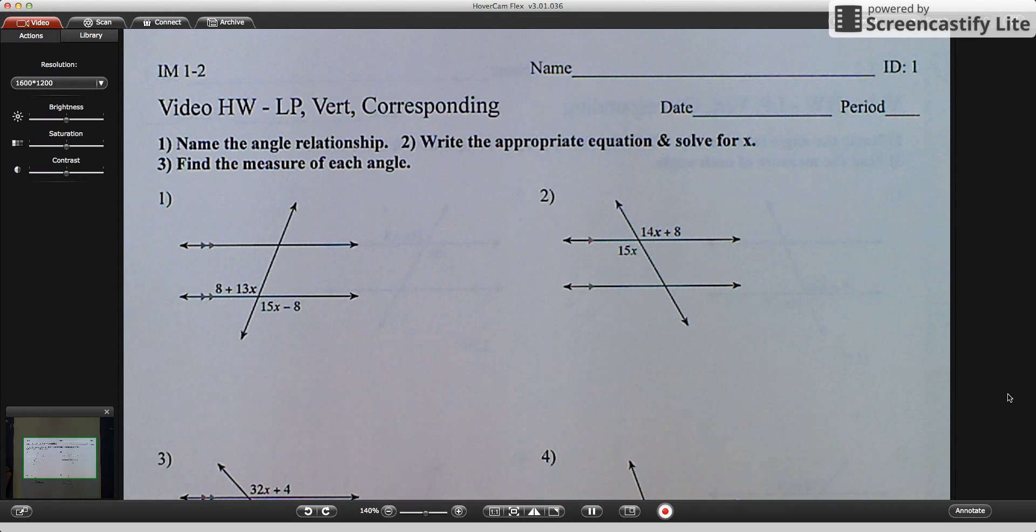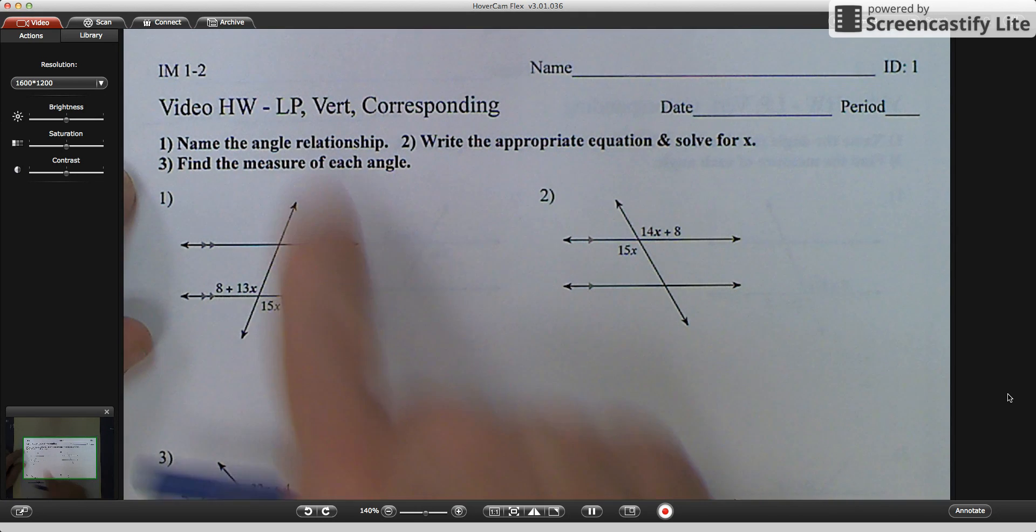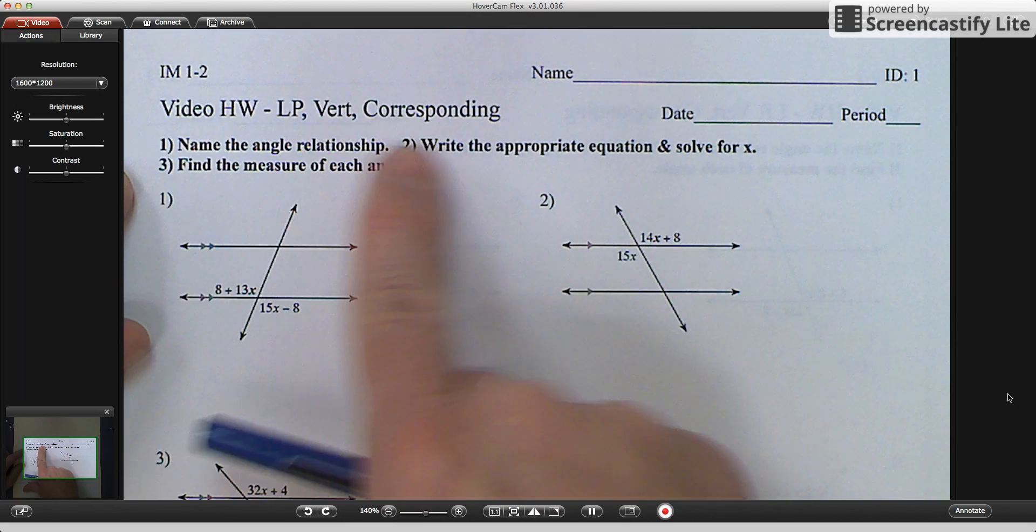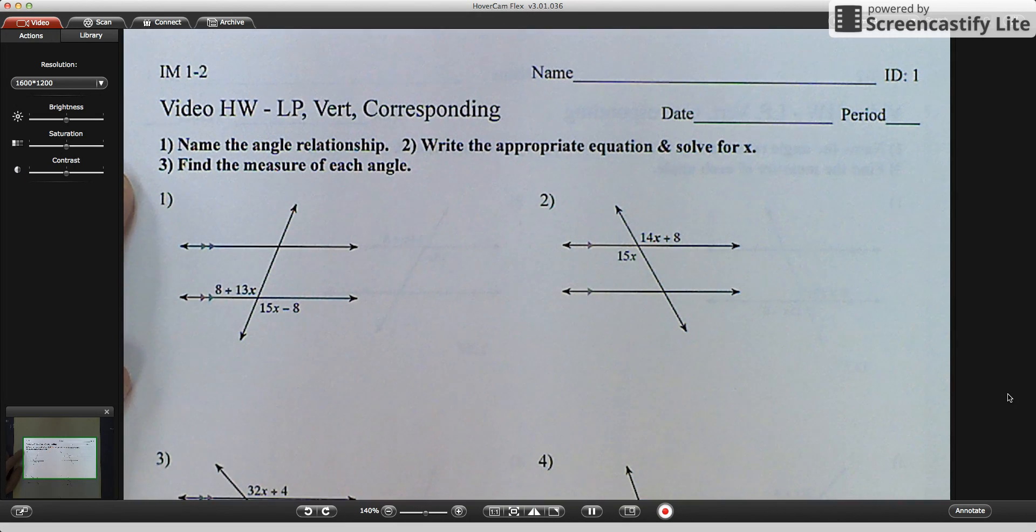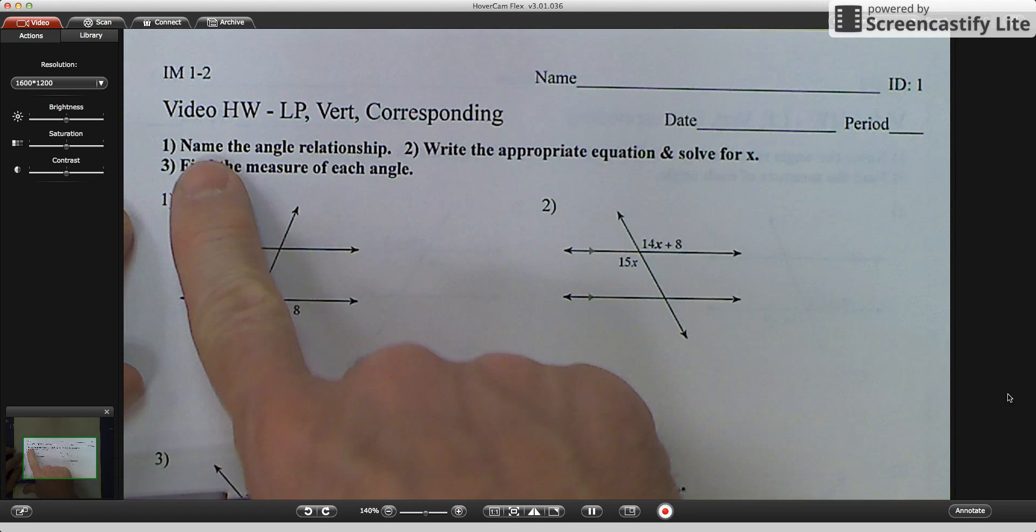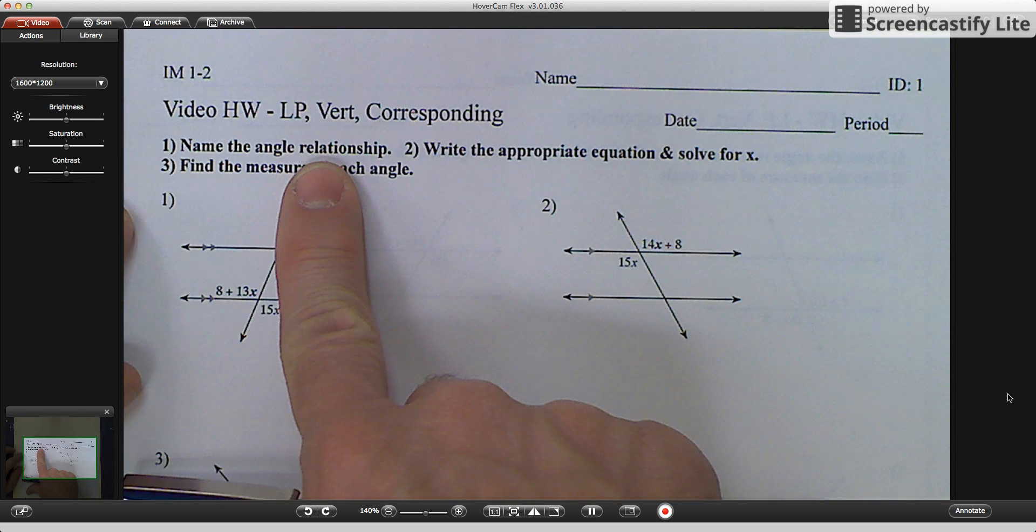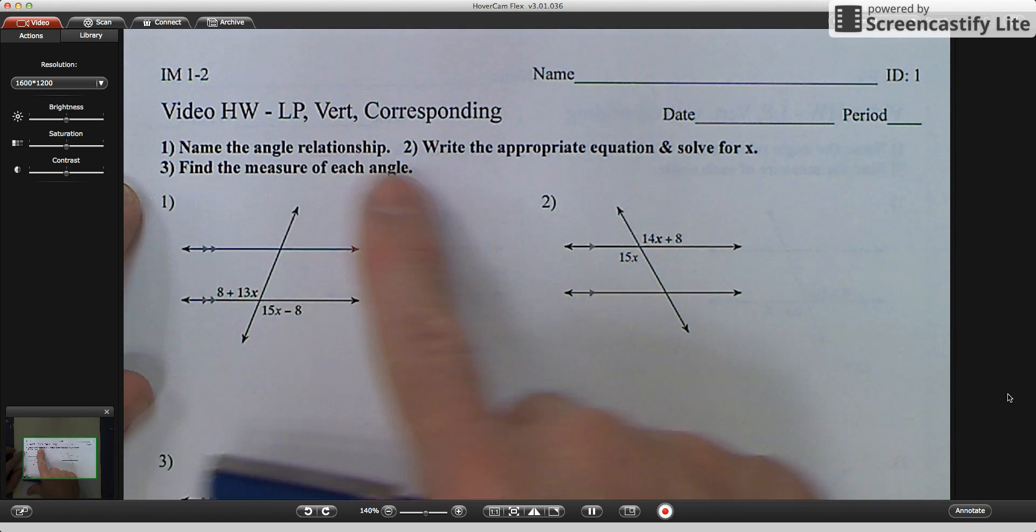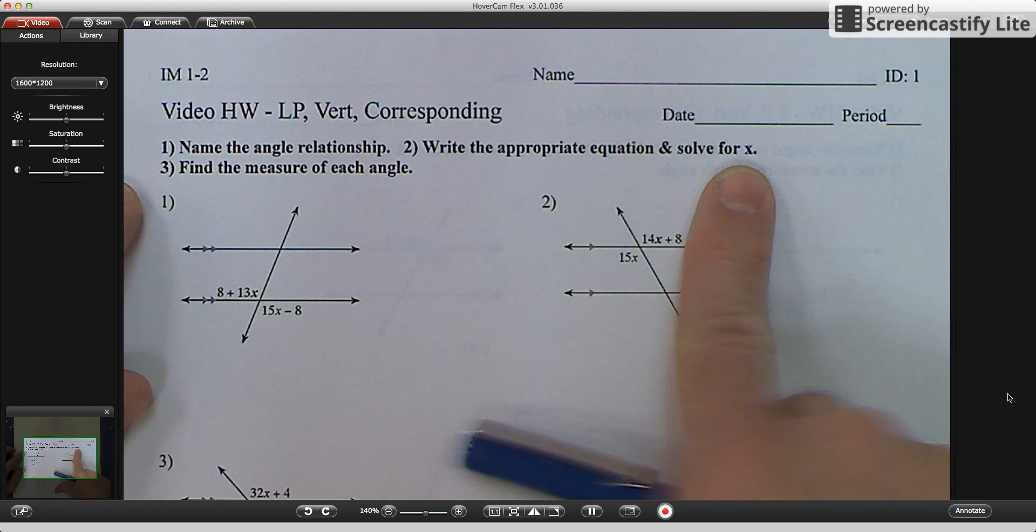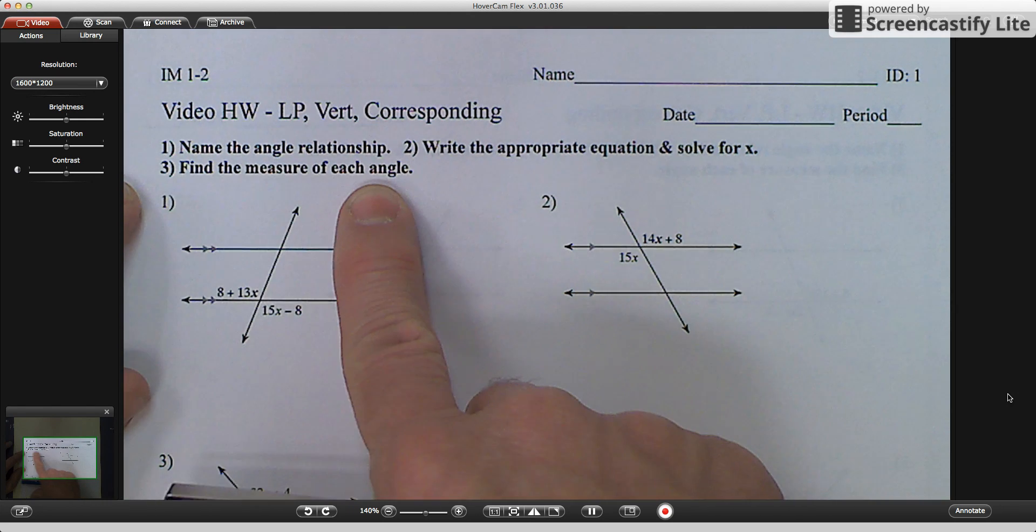We have eight questions. I'm going to do three examples and then you can do the other five on your own and we'll check them tomorrow in class. This is our video homework for linear pairs, vertical angles, and corresponding. It's asking us to do three things. First things first, name the angle relationship. Second thing, write the appropriate equation and solve for x. And the last thing, find the measure of each angle.